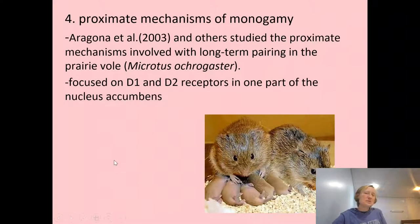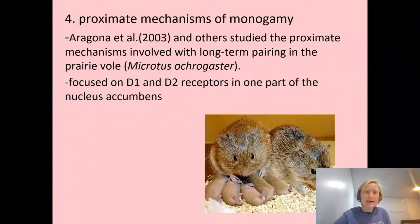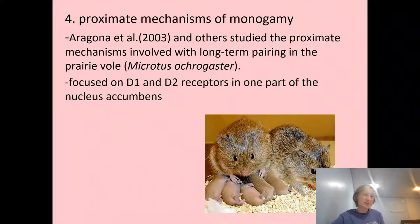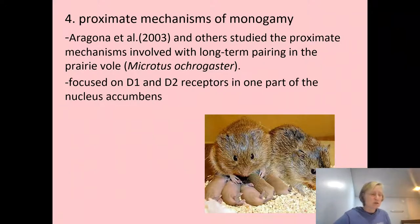What are the proximate mechanisms of monogamy? These have been well studied in the prairie vole, which forms pair bonds — an unusual trait in mammals. By proximate mechanisms, we're asking: what are the triggers or causes of monogamy — neurological or hormonal causes, for example?